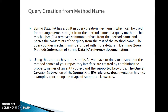Let's start with query creation from method names. Spring Data JPA has a built-in query creation mechanism which can be used for parsing queries straight from the method name of the query method. This mechanism first removes common prefixes from the method name and parses the constraints of the query from the rest of the method name. For more details on how the query is built from the method name, you can refer to the Spring Data JPA reference documentation.